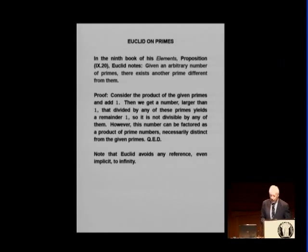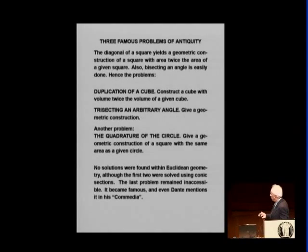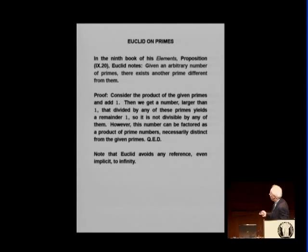there is another prime different from them. And the proof is very classical, beautiful, very short, but Euclid avoids references to infinity. So, the next, the problem of the square with the duplication of the area.